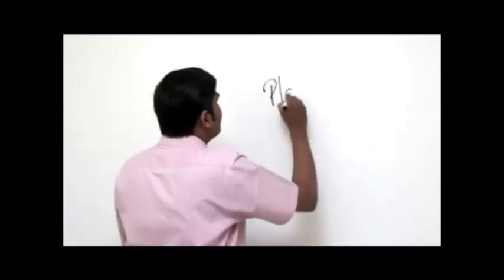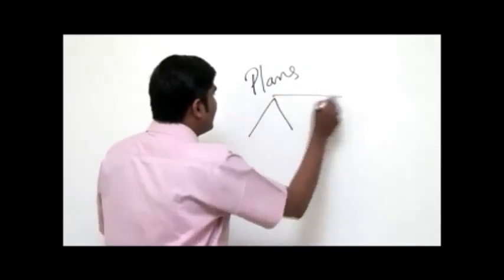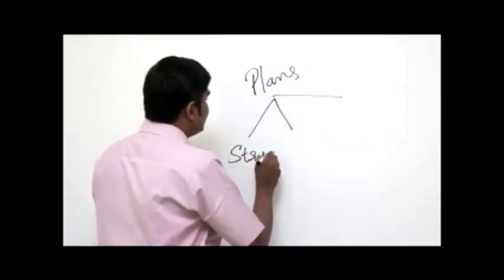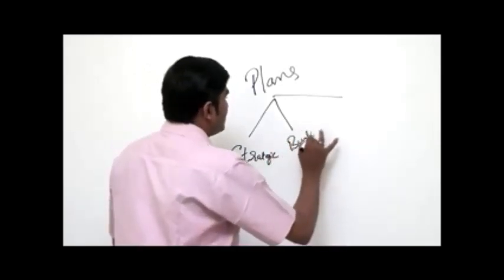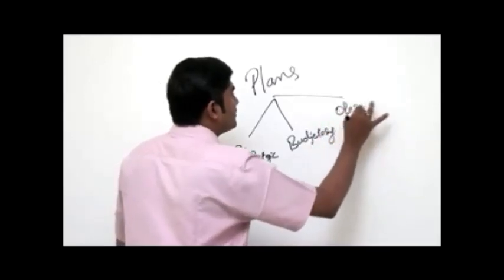There is an old saying: well planned is half done. So before initiating any action there must be some plans. In our business concerns also, planning is an essential decision-making process. As we all know, the first step of management starts with planning, followed by organizing, staffing, and controlling. Planning is a vital process and it determines the future course of action of every business. On the basis of periodicity, plans can be broadly classified into three: strategic planning, budgetary planning, and operational planning.